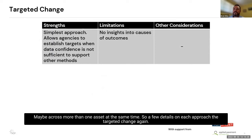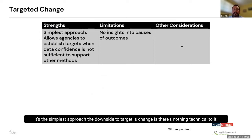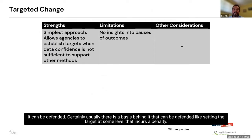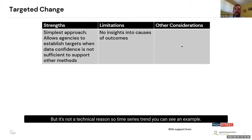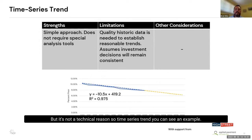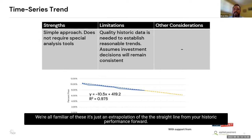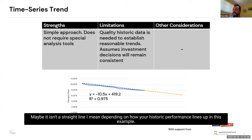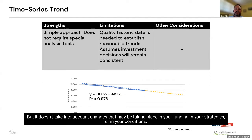Targeted change is the simplest approach, but the downside is there's nothing technical to it — it doesn't provide insights into causes or outcomes. For a time series trend, you simply extrapolate a straight line from historic performance forward using common spreadsheet tools, but it doesn't account for changes in funding, strategies, or conditions. Time series trend plus future funding takes into account changes in overall funding amount or how funding is being used — for example, when states changed from a worst-first approach to a preservation approach, or with the new federal funding bill bringing significant increases alongside inflation and cost increases.